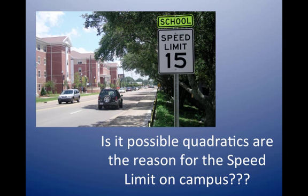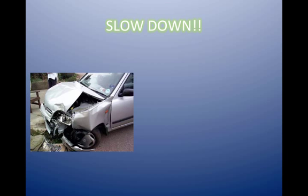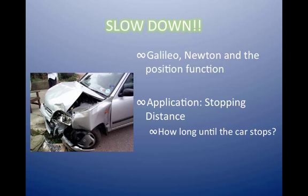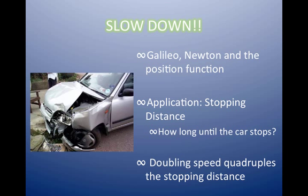Is it possible quadratics are the reason for the speed limit on campus? Yes, quadratics are the reason, and the reason is to make you slow down. Galileo and Newton came up with the position function and how we should slow down to some given constant. The application is called stopping distance, and how long until a car stops once you apply the brakes is actually a quadratic function.